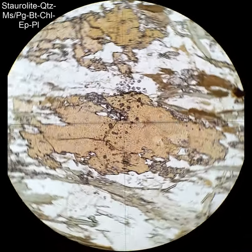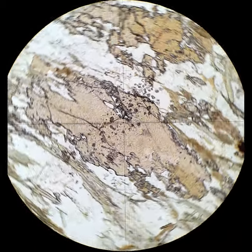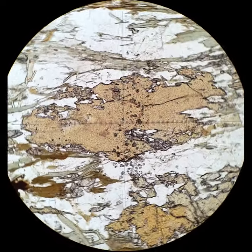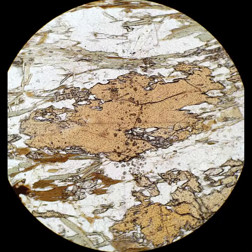And one last staurolite. This is from a metavolcanic rock. I don't know why it is, but staurolite in metavolcanic rocks does tend to be darker yellow than staurolite in metapelitic rocks, in metamorphosed mudstones, even though it's much more common in metamorphosed mudstones.